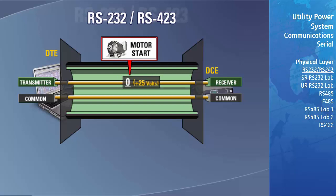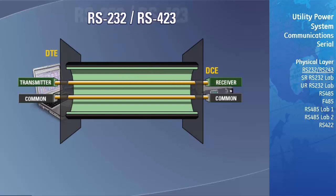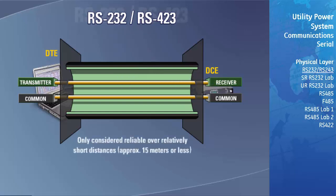Hence, this type of communications link is only considered reliable over relatively short distances — approximately 15 meters or less — at lower baud rates of 19.2 kilobits per second or less.